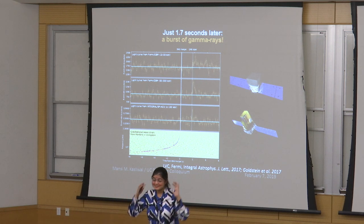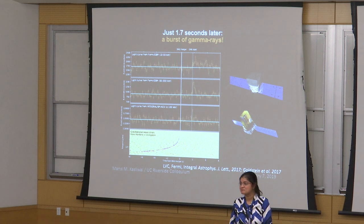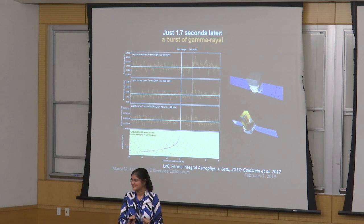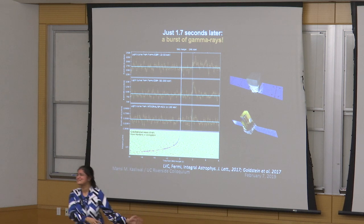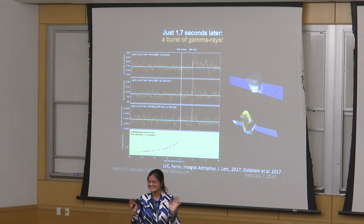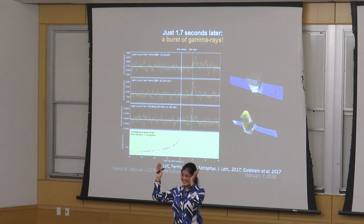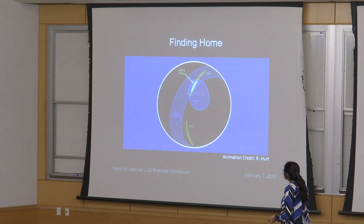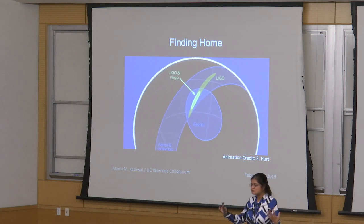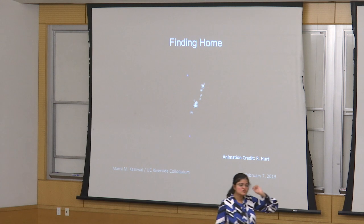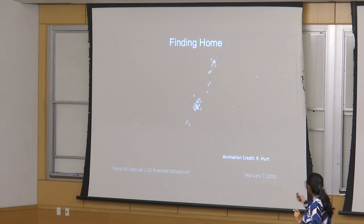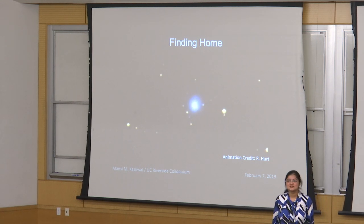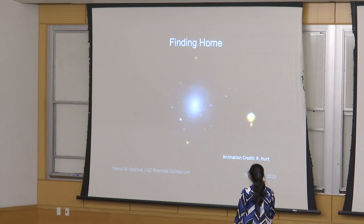Once this gamma-ray blip was detected, all time-domain astronomers get cell phones that ring no matter what they're doing. This was seven in the morning and I was making breakfast for my two-year-old — but you drop everything and take every telescope in the world and look in this direction. The game is finding home: gravitational waves are just ripples on the fabric of spacetime with no position information. To know which of the 40 galaxies inside this error circle was the true home of the merger, you need telescopes.